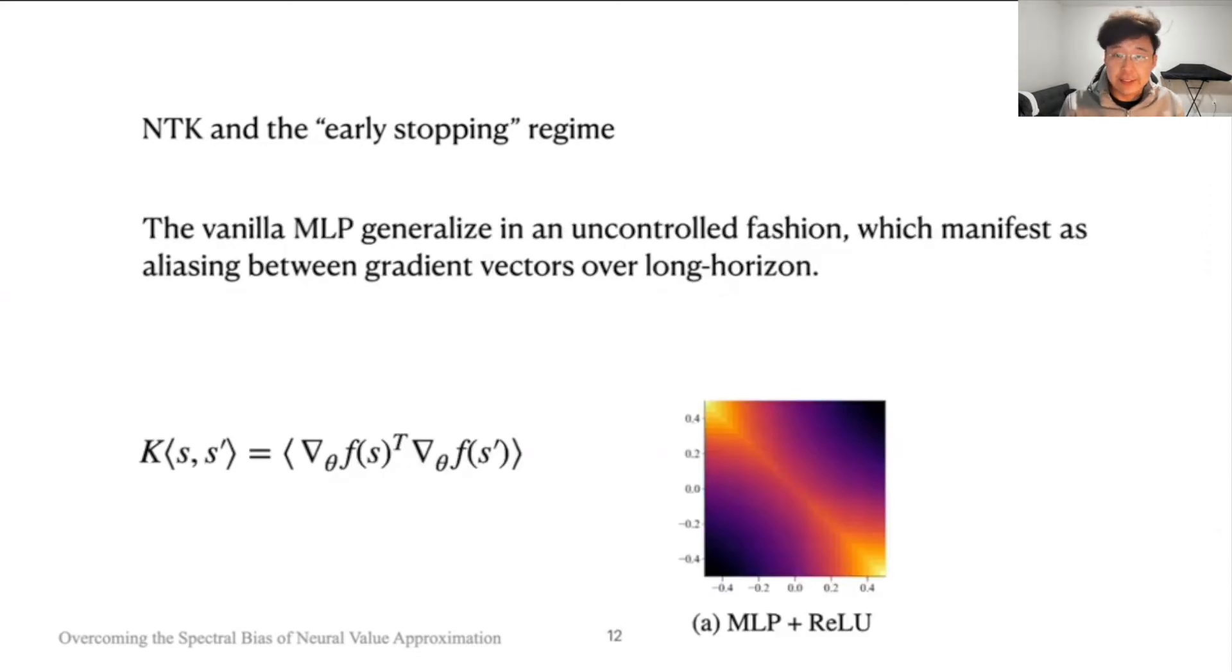We can visualize the cosine similarity between the gradient vectors of different inputs. And the strong off-diagonal terms mean when we use the neural network as a key-value store, the write operation that is keyed by the gradient vectors has uncontrolled aliasing between the gradients of input states that are far away from each other.